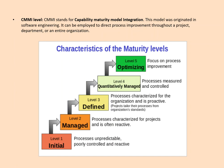At Level four, Quantitatively Managed, we start to measure and control the processes — if there is any change, we make sure those are controlled and processes are measured. Finally, Level five is Optimizing, which focuses on process improvement. Even though an organization has reached the top level, they are still working to improve the process.